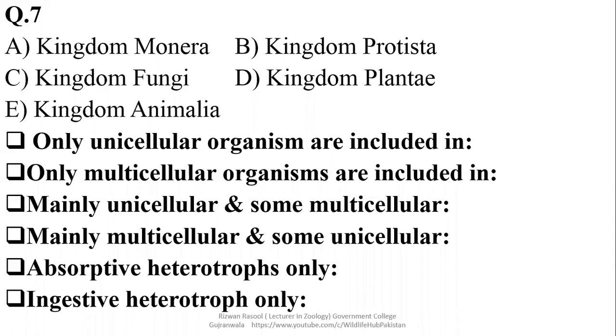Kingdom Monera, Kingdom Protista, Fungi, Planti, and Kingdom Anemilia. There are the options of a five kingdom system that life according to the five kingdom system is divided into five major groups. And there are certain questions which can be asked in this case: that only unicellular organisms, they are found in which group? They are found in Kingdom Monera, so right option is Alpha.